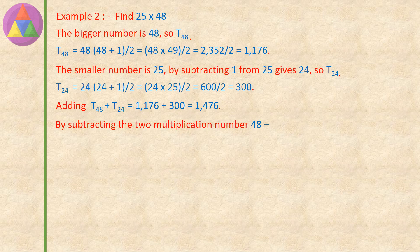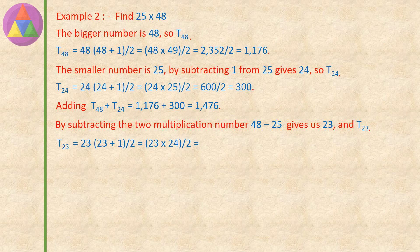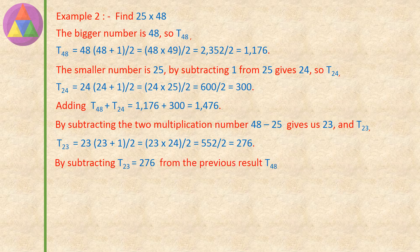Subtracting the two multiplication numbers 48 and 25 gives 23, and we find T23. T23 equals 23 into (23 plus 1), divided by 2, equals 23 into 24, divided by 2, equals 552 divided by 2, equals 276. So the value of T23 is 276. Subtracting T23 (276) from the previous result 1476: 1476 minus 276 equals 1200. So 25 into 48 equals 1200.